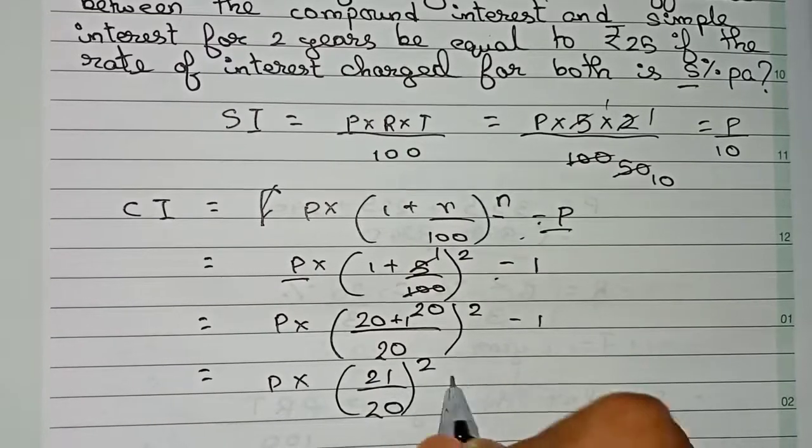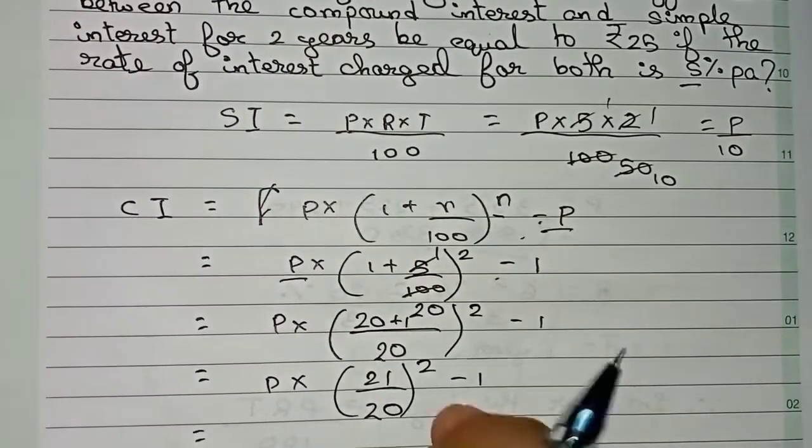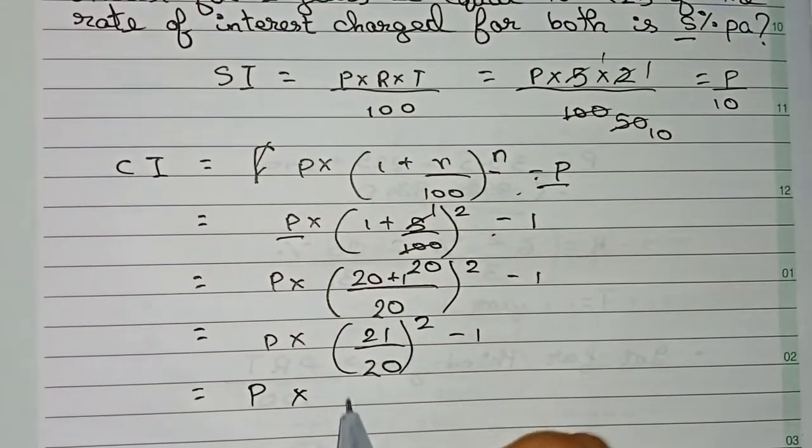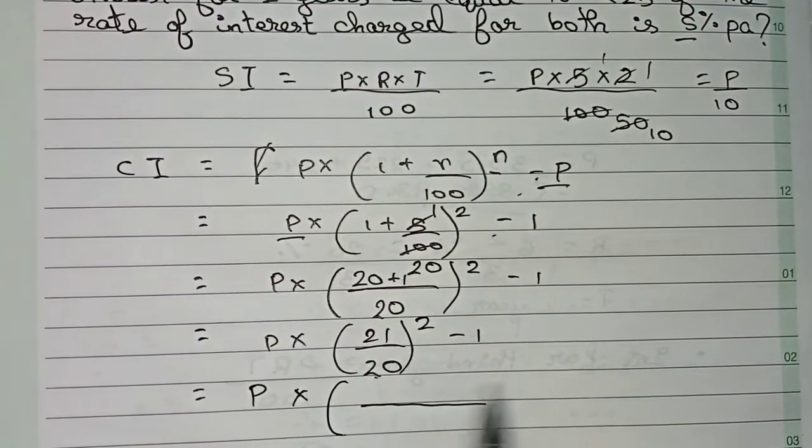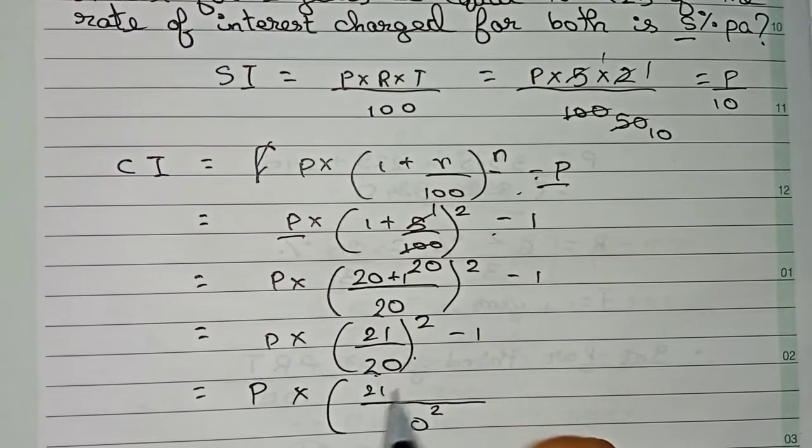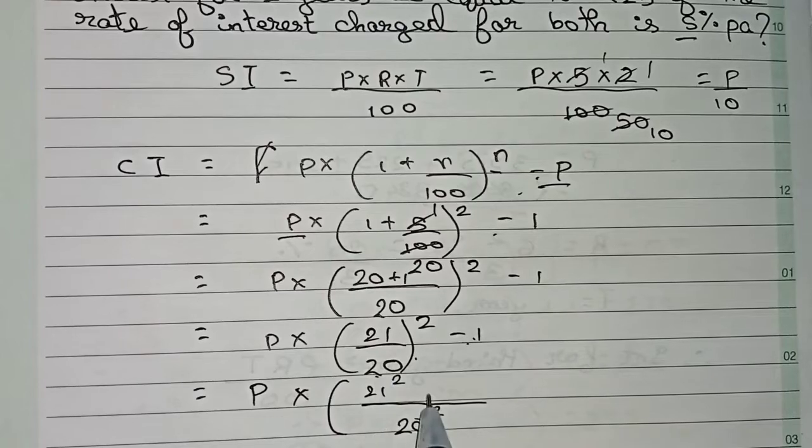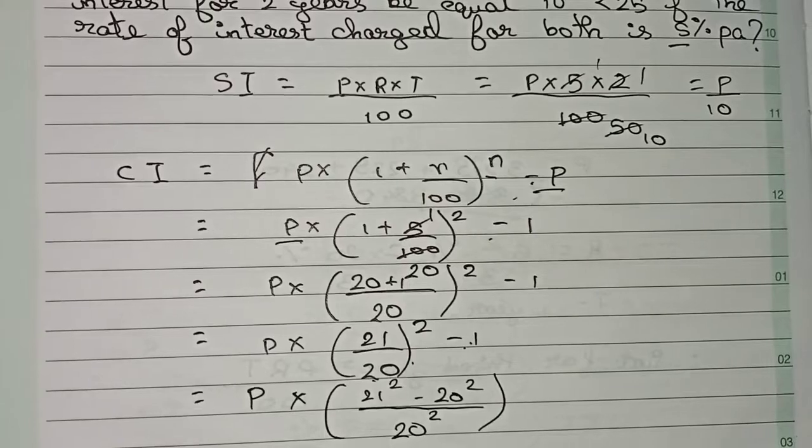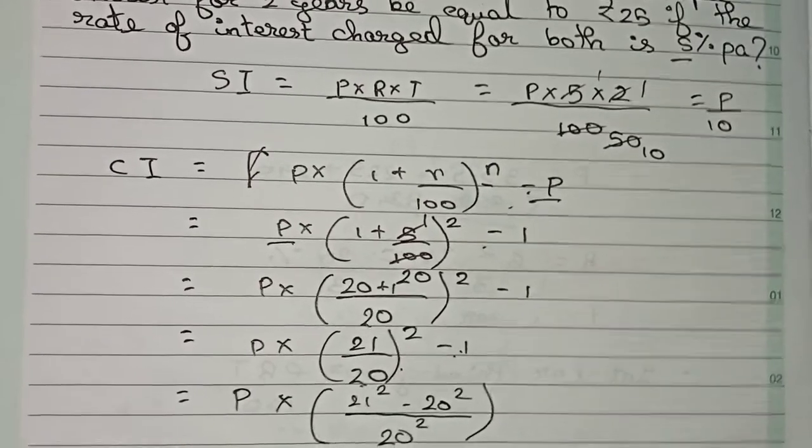So this square minus 1 we do here. So minus 1 we will do like this: take 20 as the common, so 20 square minus 21 square minus again 20 into minus 1 that is 20 square. Now to take out the value we have to find out the square first.